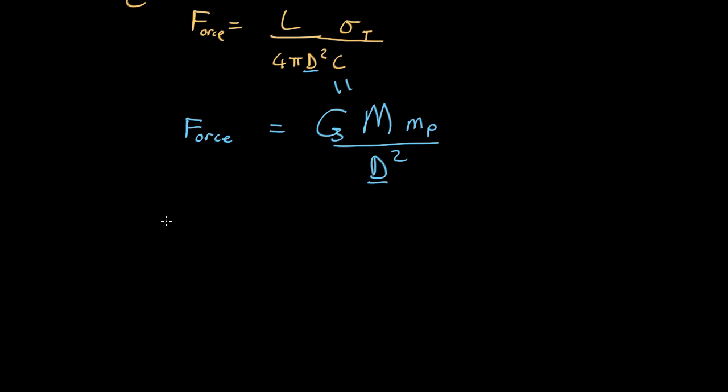So the critical value is when these equal each other, which gives you L equals 4 pi G M M_P C over the Thomson cross-section. This is called the Eddington luminosity, L Eddington, after the British astronomer called Arthur Eddington, curiously enough.